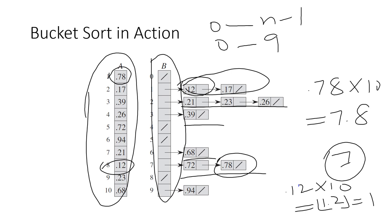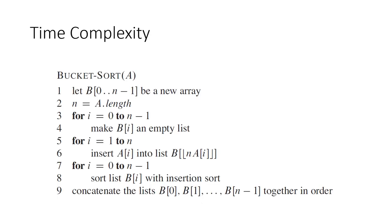After sorting each bucket using insertion sort, you perform concatenation to get the final sorted array. Now let's analyze the time complexity of bucket sort line by line. For the first loop, you create empty lists and perform constant operations, which is O(n).